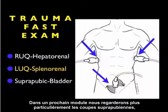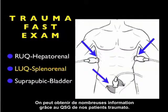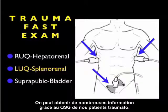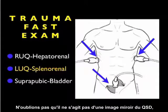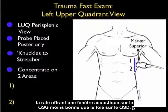In an upcoming module we'll look specifically at the suprapubic or bladder view of the trauma FAST exam. There's a lot of information we can gain by looking at the left upper quadrant in our trauma patients, and we'll need to know that it's not a mirror image of the right upper quadrant — the spleen offers less of an acoustic window onto the left upper quadrant than the liver does on the other side.